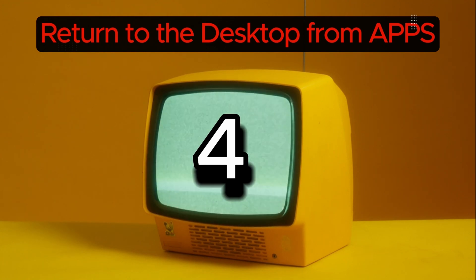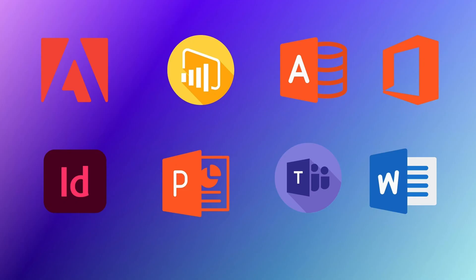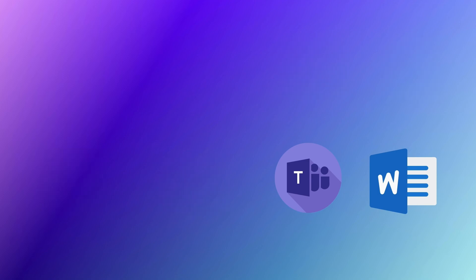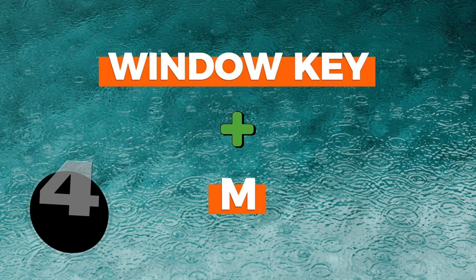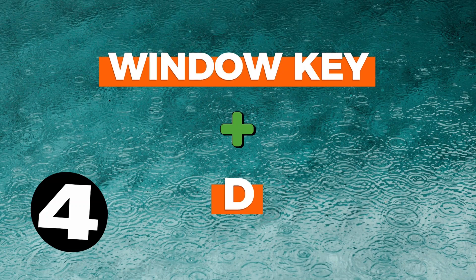Number four: return to the desktop from apps. If you have been working on different files, folders, and apps that are all open on your desktop and you don't want to close each one by one, just hit Windows key + M. You can also hit Windows key + D for the same results.